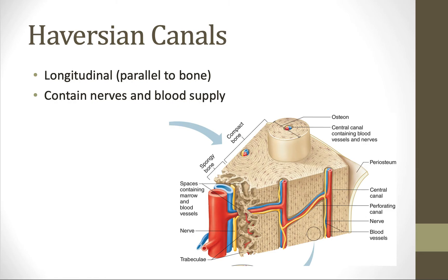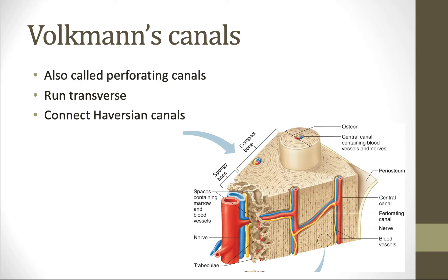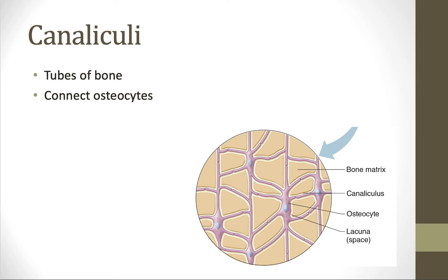Haversian canals are longitudinal canals — parallel to the bone — and contain both nerves and blood supply. Volkmann's canals, also called perforating canals, run transverse or perpendicular to the Haversian and medullary canals, connecting the Haversian canals with each other and with the medullary canal. Finally, the canaliculi are tiny tubes of bone that connect osteocytes. Keep in mind, each of these types of canals is just that — an open tube, tunnel, or space — with things inside that space like blood vessels, nerves, or osteocytes.